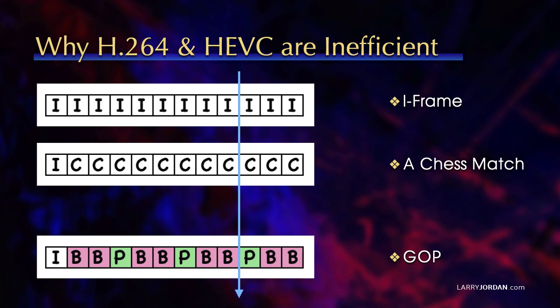Well, here's an example. Think of the GOP, the group of pictures, as a chess match. We all know how a chessboard sets up. It always sets up the same way. The pieces are always on the same square. So the very first image that we take of a chessboard is complete. We see where every piece is.